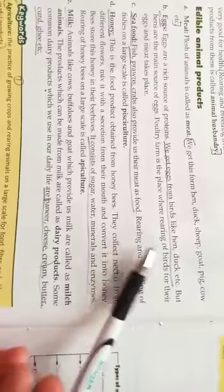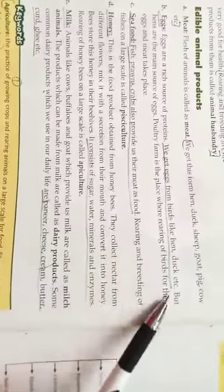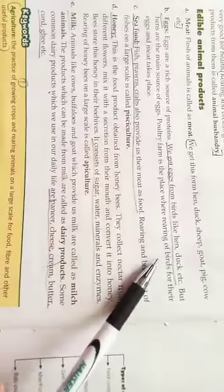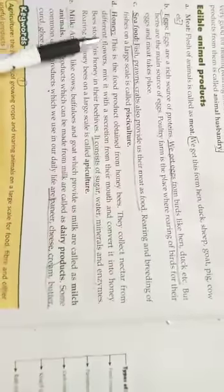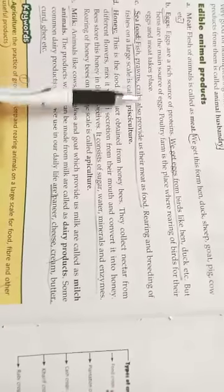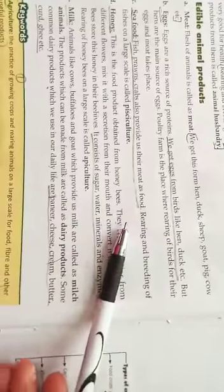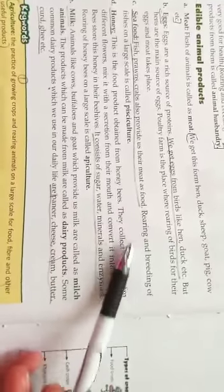Seafood yielding animals. Seafood: fish, prawn, crab. We take seafood and breeding and rearing is called pisciculture.